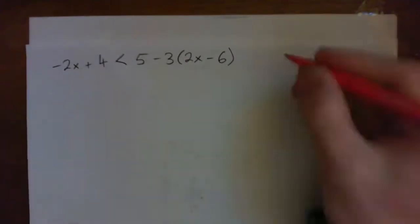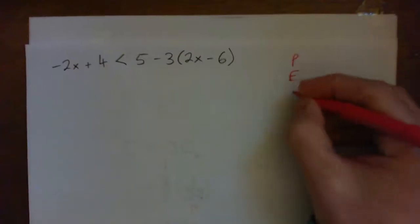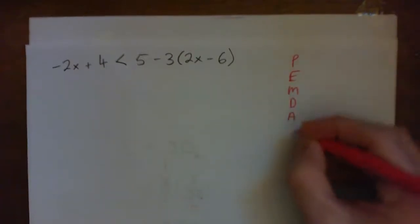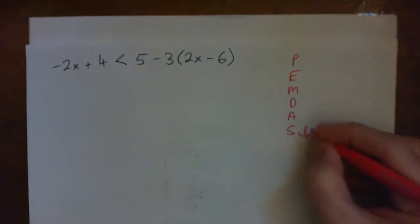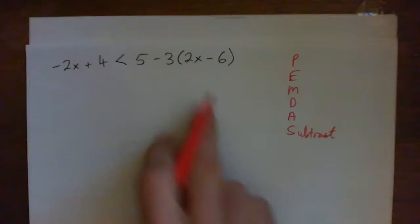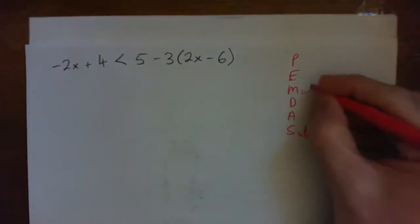PEMDAS. Right, good job. So we've got to watch out for the PEMDAS order of operations. We can't just go 5 minus 3 because that's subtracting first. So we've got to do our multiplications first, multiply before we subtract. So that's the first thing.